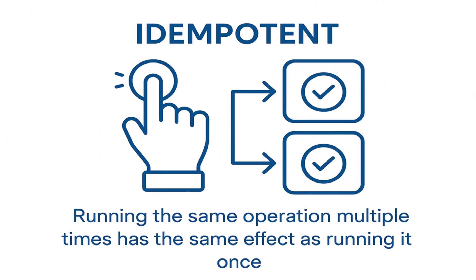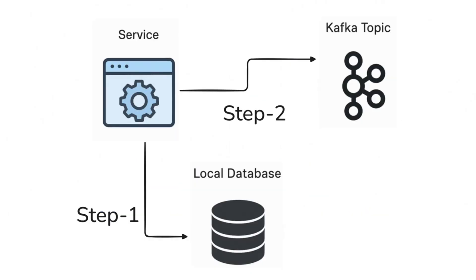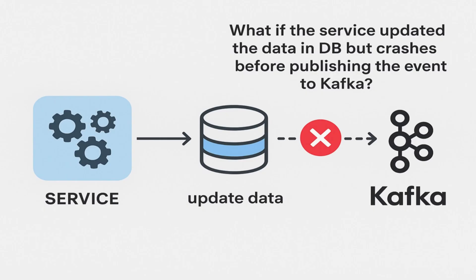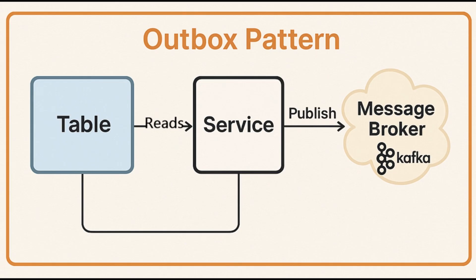Let's discuss one more scenario using the order service example. Before publishing the event to the Kafka topic, the service writes the data to its local database. But what if the service updated the local database and then crashes before publishing the event to Kafka? To avoid this, we can use design patterns such as the outbox pattern. It is used to reliably publish messages without losing them. Instead of directly publishing to Kafka or RabbitMQ, we first write the event to a local database table that acts as an outbox component. Then a separate service or thread reads that table and publishes it to the desired message broker. We will discuss the outbox design pattern in detail in the upcoming videos.